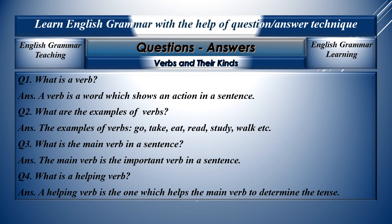Question three: What is the main verb in a sentence? The main verb in a sentence is the important verb. Question number four: What is a helping verb? A helping verb is the one which helps the main verb to determine the tense.